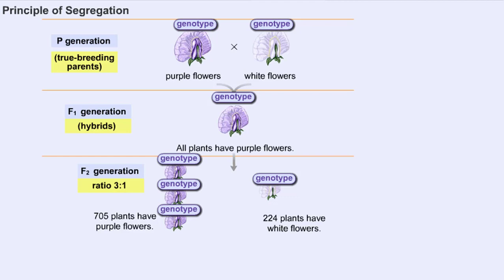These symbols represent the genetic makeup called the genotype. All F1 plants carry two alleles, one dominant and one recessive, expressed by upper and lowercase letters. This is called a heterozygous dominant genotype. 25% of the offspring are homozygous dominant because they carry two copies of the dominant allele. 25% of the offspring have white flowers, with a genotype of lowercase p, lowercase p.